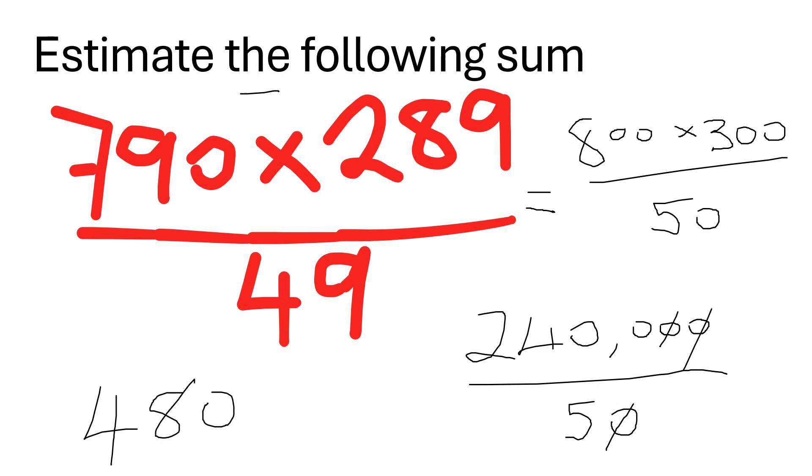So my estimation to this sum is 4,800. And again, it's only a rough estimate. The examiner does not want you to work out the exact answer. They want you to round it to an appropriate degree of accuracy. In this case, one significant figure and then you do the answer in your head.